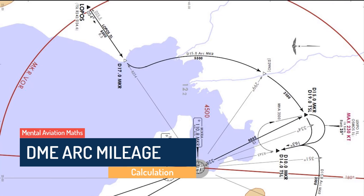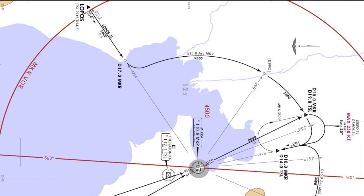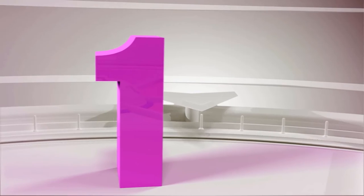In order to calculate the arc, we can use different methods. First, geometry methods. The geometry formula L equals theta times R, where L is the length of the arc, theta is the angle, and R is the radius of the arc.